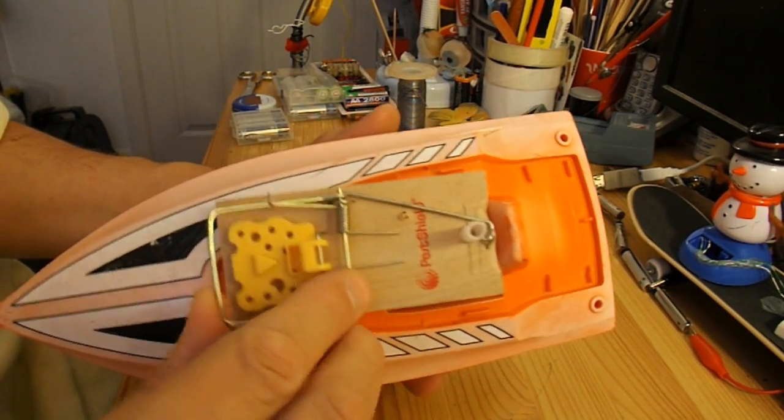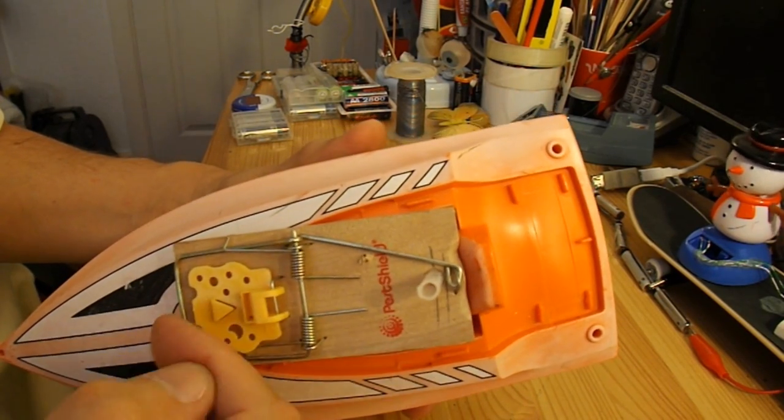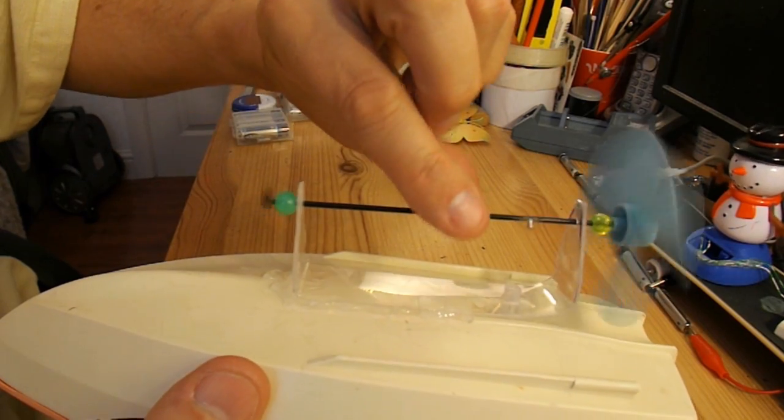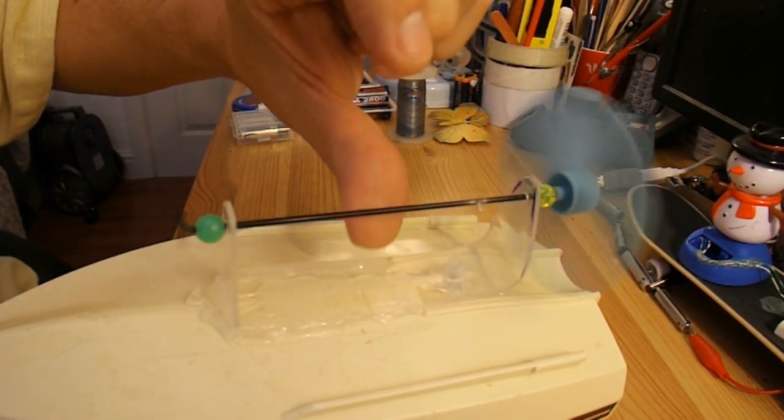I'll trim that off flush, and that will pull the string up the tube. And pulling the string up the tube will spin the propeller.